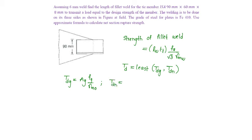Whereas TDN is given as 0.9 times net area into fu by gamma m1.